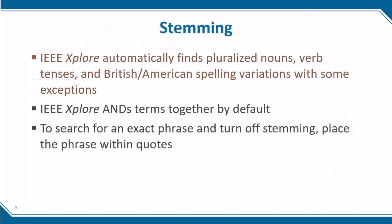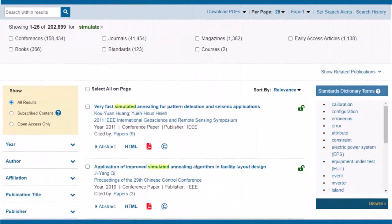IEEE Xplore automatically finds pluralized nouns, verb tenses, and British and American spelling variations, with some exceptions. For example, if I search the word "simulate," it will automatically find "simulates," "simulated," and "simulating." It will not find "simulator" or "simulation," as those are not pluralized nouns or verb tenses.